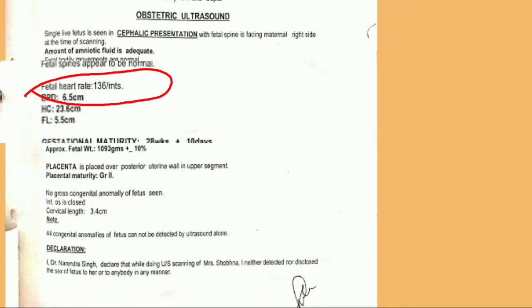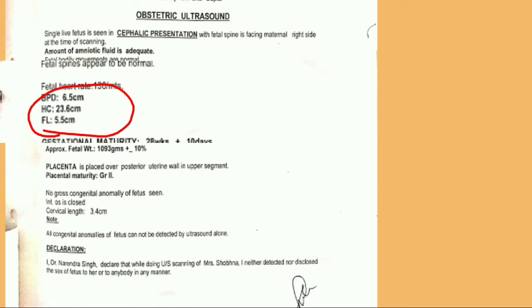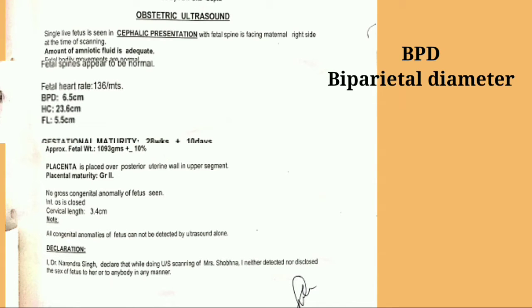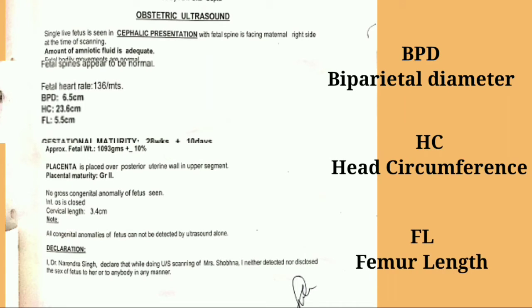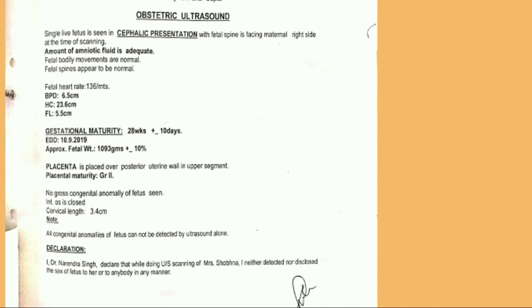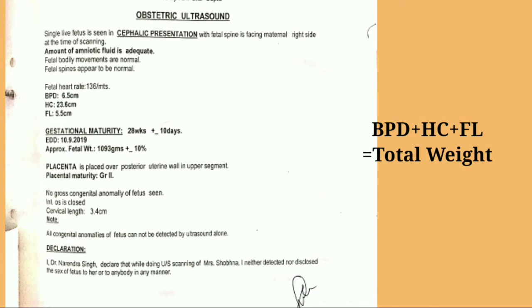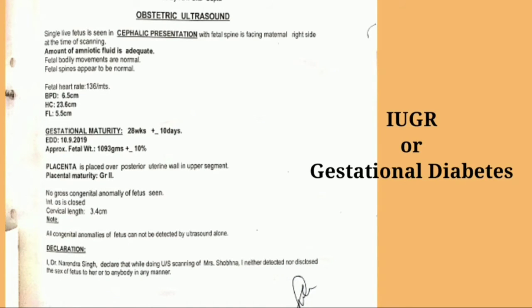Next are BPD, HC, and FL. BPD is biparietal diameter, which is used along with FL and HC to calculate the size of the baby. HC is head circumference — the size of the head — and FL is femur length, the length of the baby's leg. The total weight is calculated using these three terms with a medical formula. If the value is low there are chances of IUGR, and if high, chances of gestational diabetes increase. I have explained this in a separate video.